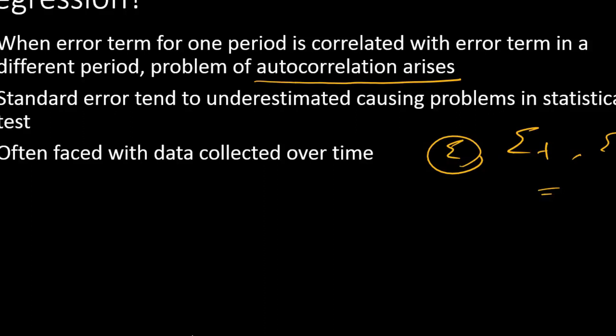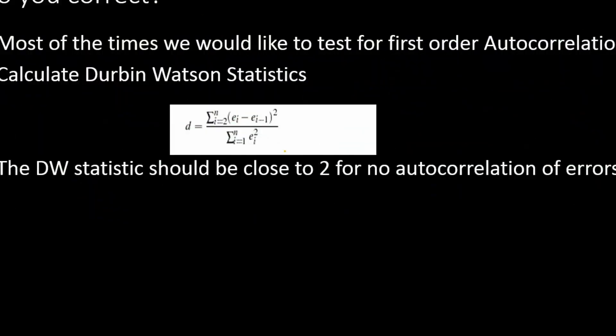What happens when there is autocorrelation and you use simple regression? Your standard error tends to be underestimated, which causes problems in statistical tests—your statistical test will not be valid. This happens with data collected over time. If I have sales data for different years, most likely your sales values will be correlated across time, so you face the problem of autocorrelation.